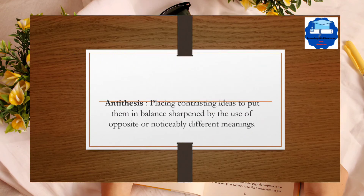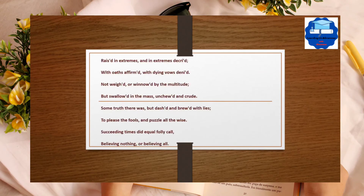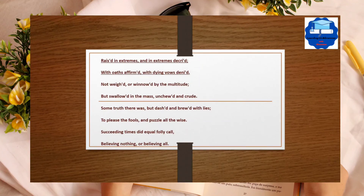Antithesis involves placing contradictory ideas in balance, sharpened by the use of opposite or noticeably different meanings. It is common in rhetoric and was particularly favored by the Augustan poets and users of heroic couplets. John Dryden in Absalom and Achitophel has used this technique very effectively: 'Raised in extremes and in extremes decried, with oaths affirmed, with dying woes denied.'